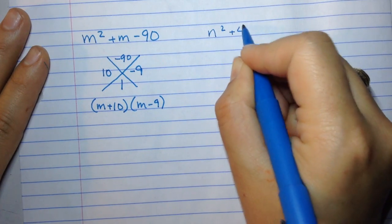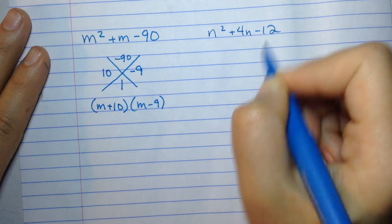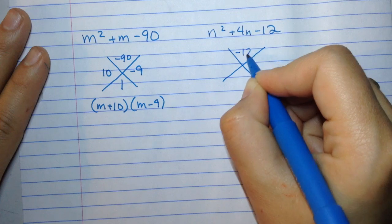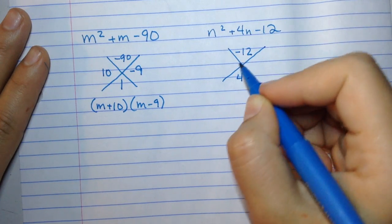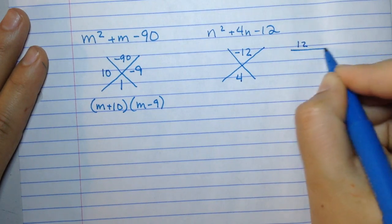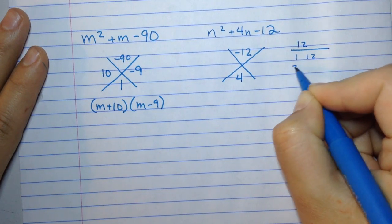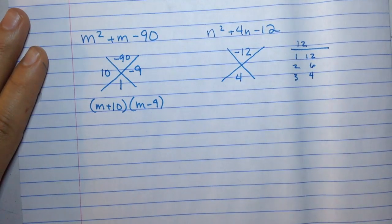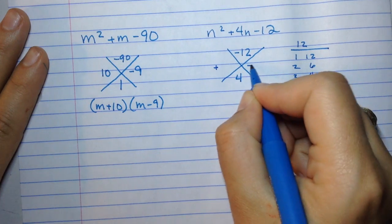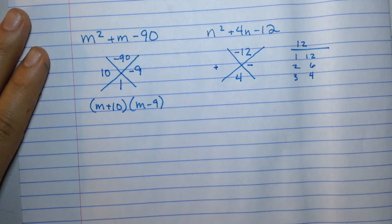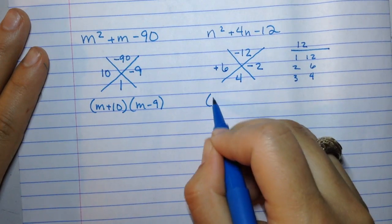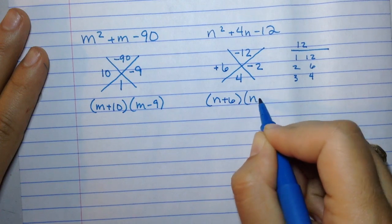n squared plus 4n minus 12 is our next example. We would set up the x puzzle. Negative 12 will go in the top. 4 would go in the bottom. Things that multiply to 12 and add to 4. If you need to do this: 1 times 12, 2 times 6, 3 times 4. Because it's negative in the top, 1 must be positive and 1 must be negative. The only combination here that will work is positive 6 and negative 2. So this trinomial factors to (n plus 6)(n minus 2).